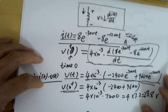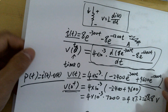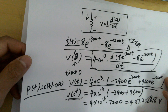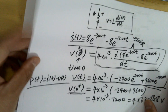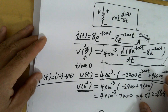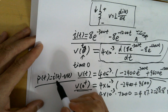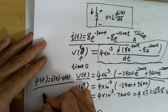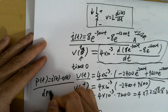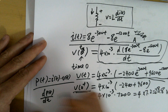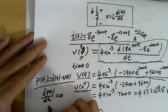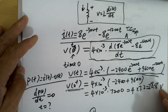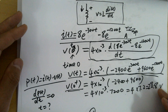Another question: find the time at which the power delivered to the inductor is a maximum. After you have p(t), to find the maximum take dp(t)/dt = 0, set that equal to zero, and solve for t — that gives you the time at which power is maximum.